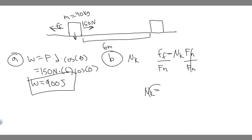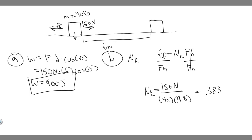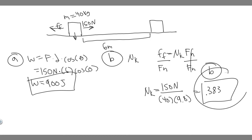So mu sub k equals the force of friction, which we already know is 150 newtons, divided by the normal force, which is mg. The mass of this crate is 40 multiplied by g, the gravitational constant, which is 9.8. So 150 divided by 40 times 9.8 gives you about 0.383. The coefficient of kinetic friction doesn't have a unit, so it's just a number. So 0.383 is your answer to B, and 900 joules was your answer to A.